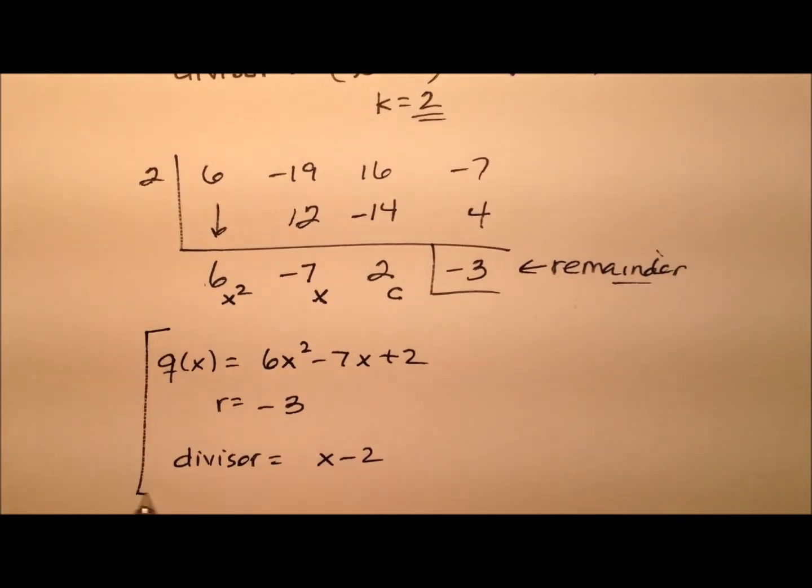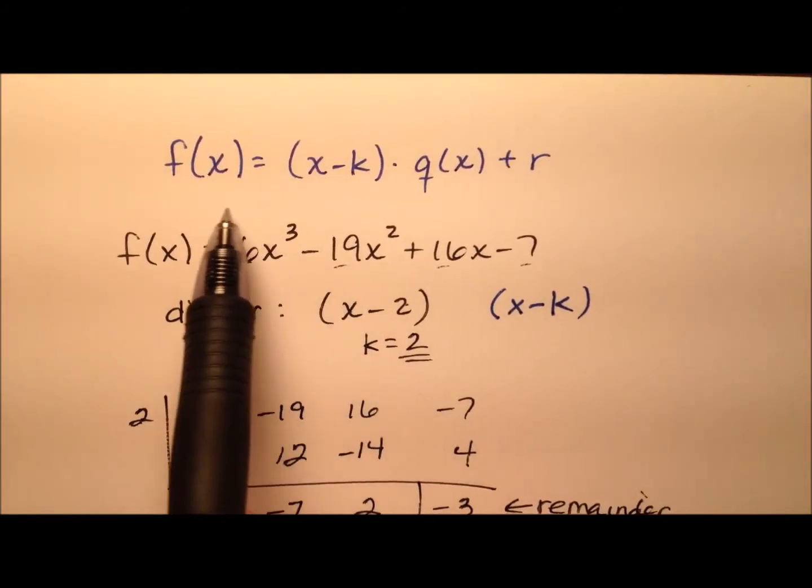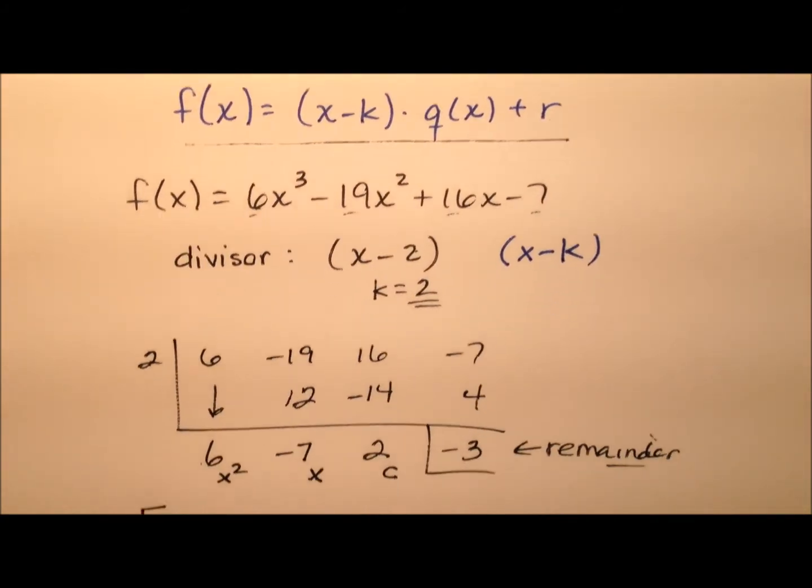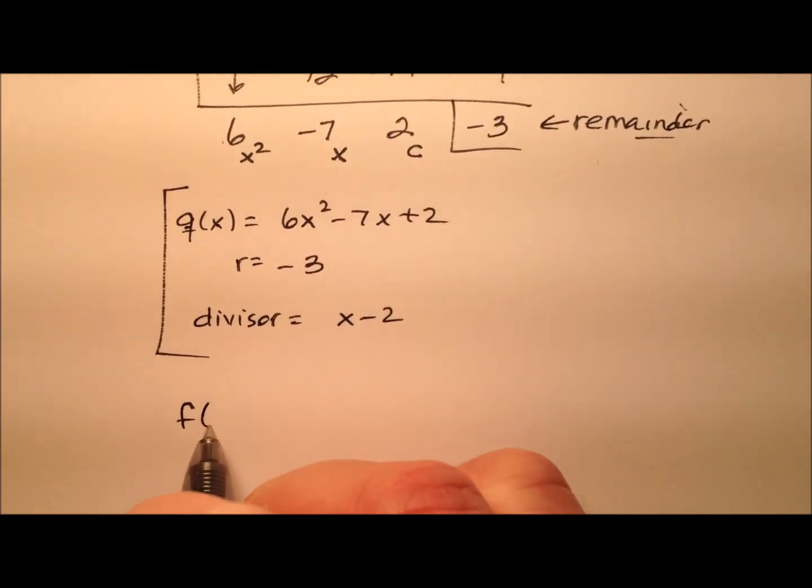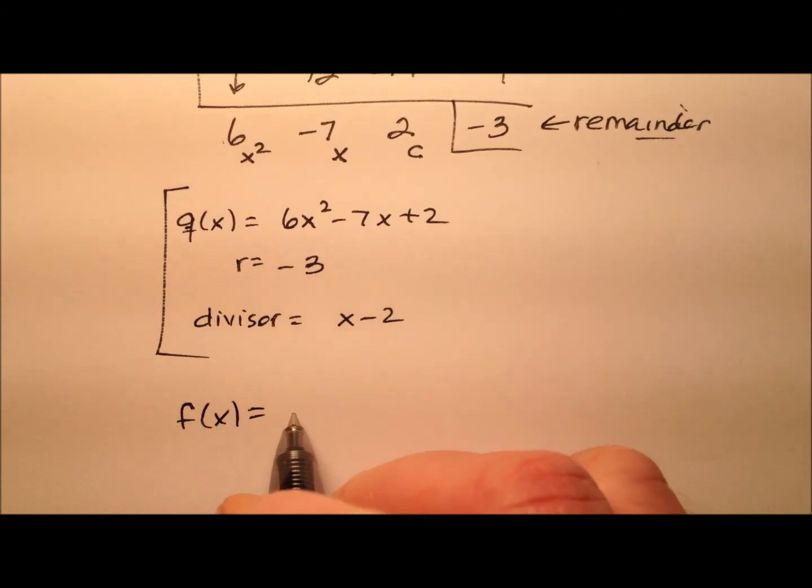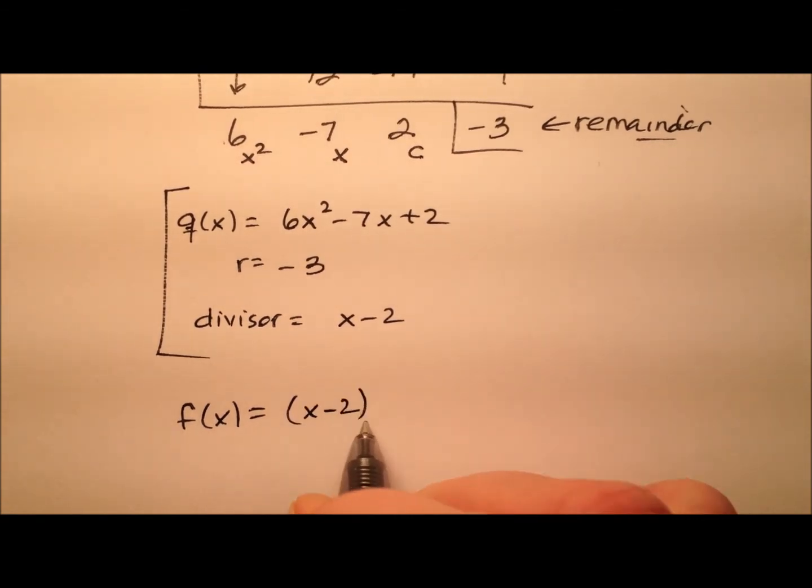Okay, so now that we have all three pieces - the q(x), the r, and the divisor - I can go ahead and write it in this form. So I'm going to say my function can be rewritten as the x minus 2, which was my divisor.